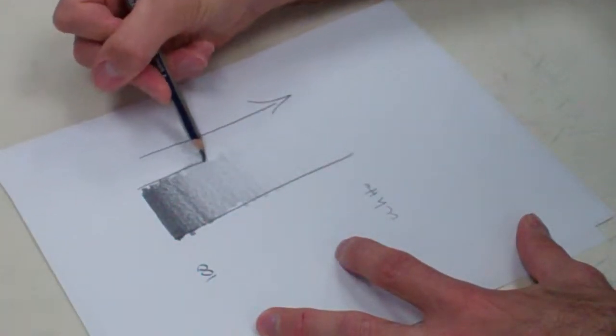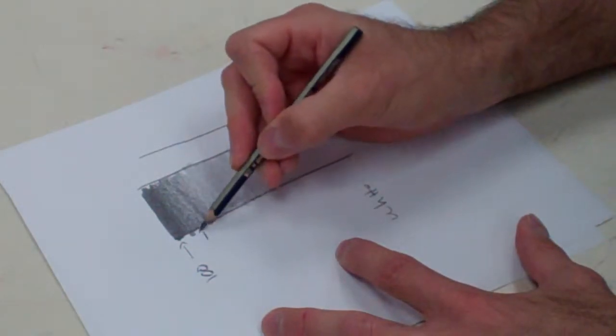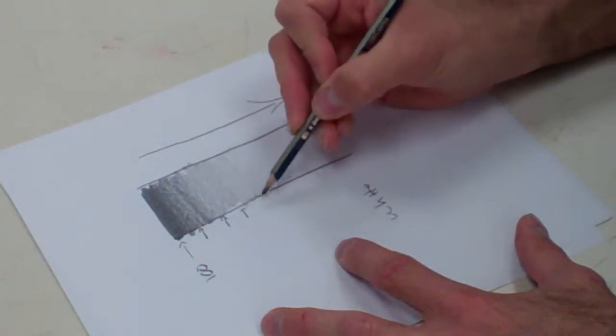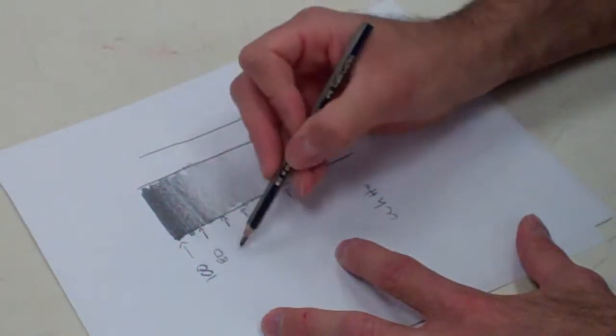If I bring this down here, I've just created a value scale where this is 100% black. And as I go down across here, you'll notice that it's getting lighter and lighter. This might be 80% black, this might be 60.